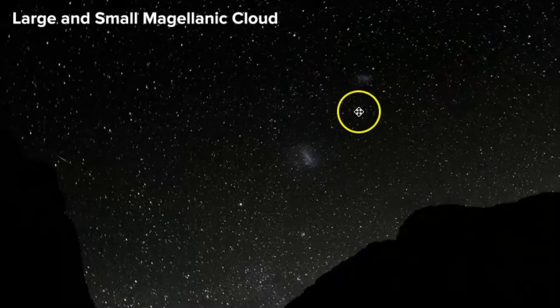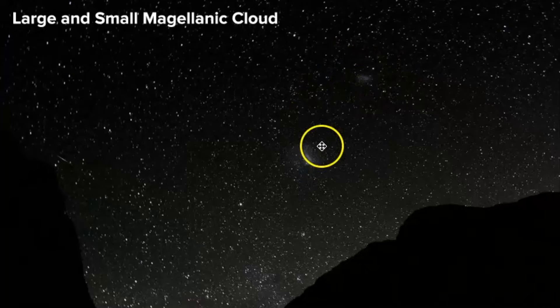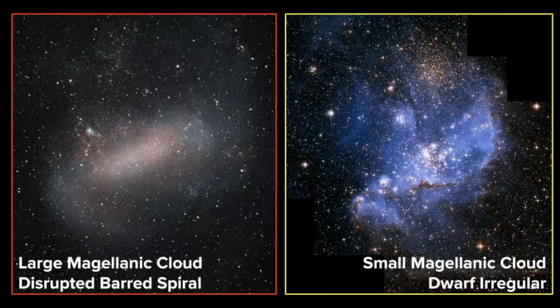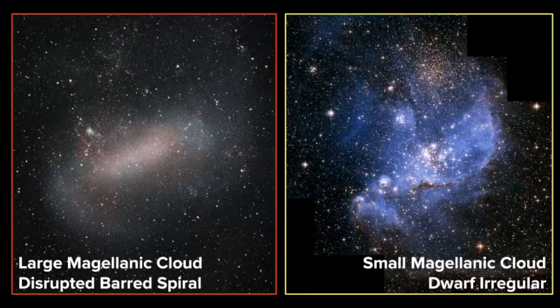Some examples include the Small Magellanic Cloud. The Large Magellanic Cloud was once classified as a regular galaxy, but now it is classified as a disrupted barred spiral. And even though the Small Magellanic Cloud is a dwarf irregular galaxy, I have read that there is a bar structure within here. This takes us to our next category, which are dwarf galaxies.